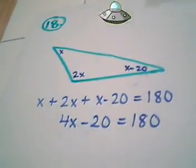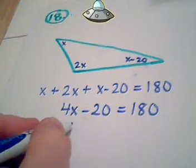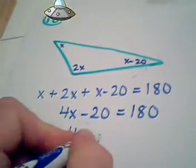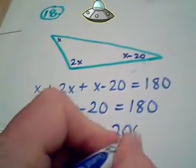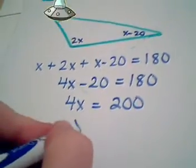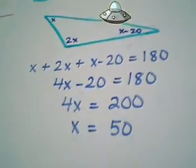Very simple equation. Add 20 to both sides of the equation to get 4x is equal to 200, and divide both sides of the equation by 4, which gives me x is 50.